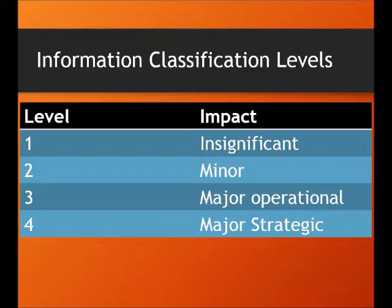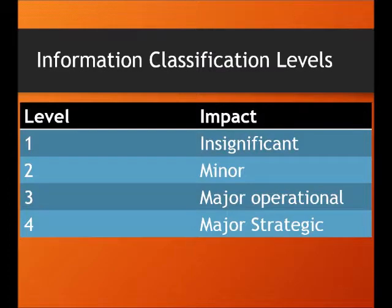This control suggests four levels of classification, but that could differ depending on each organization's requirements. The levels depend on the effects that an information disclosure might cause. The lowest level would have no effect if the information is disclosed. The second would cause a minor inconvenience, while the third would cause a significant temporary impact on operations. The highest level would cause serious strategic impact that would affect the survival of the organization.